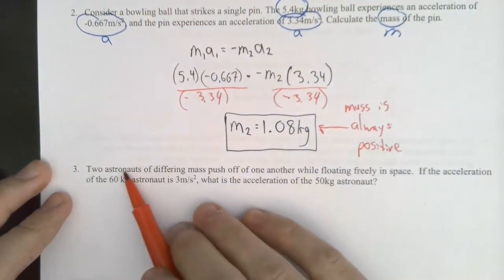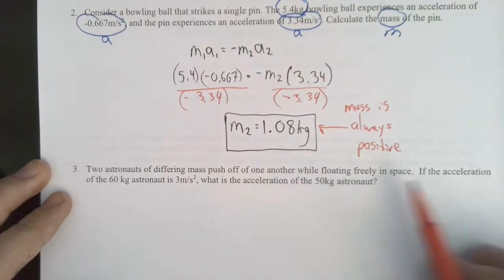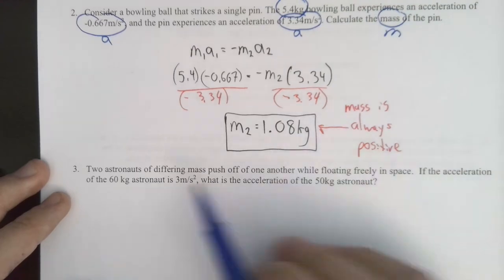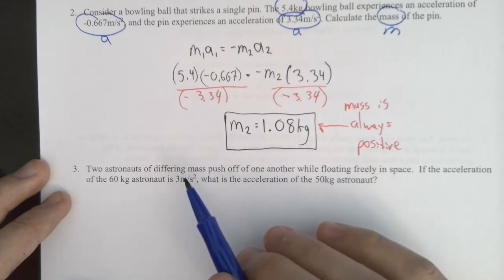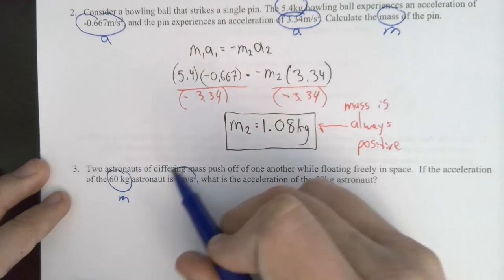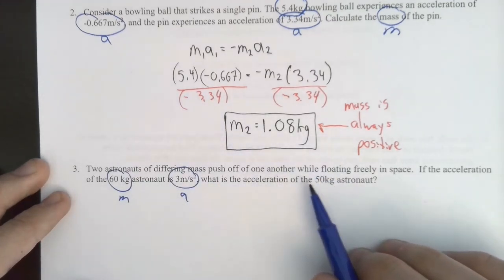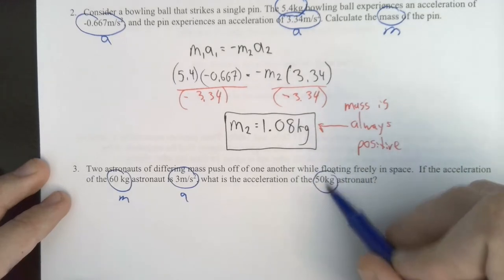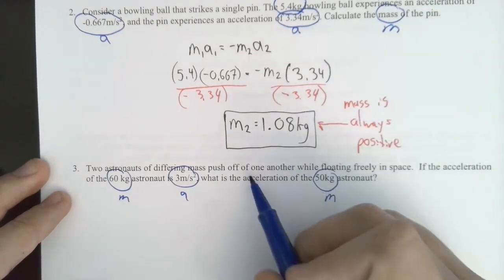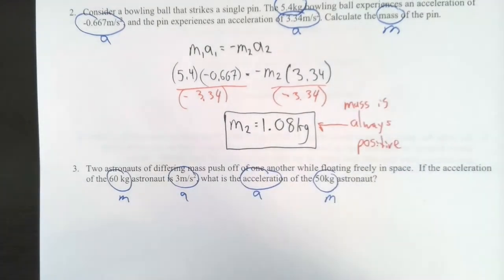Number 3. Two astronauts of differing mass push off of one another while floating freely in space. The acceleration of the 60 kilogram astronaut is 3 meters per second squared. Let's label those. Kilograms is M. It's A. What is the acceleration of the 50 kilogram astronaut? So there's another M. And look at that. They're asking us for acceleration. Just like before...